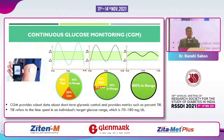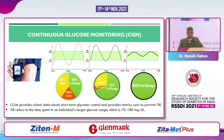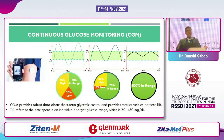Continuous glucose monitoring is the best way to know glycemic variability. As we moved from sugar measurements to A1c, a new methodology to monitor glycemic variability is continuous glucose monitoring, now available in our country also. This slide shows that there could be three different types of patients with the same A1c.